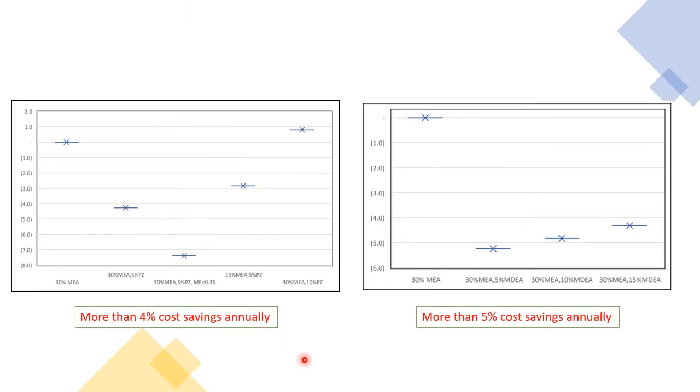The cost estimation for different blends has been done in this project to compare with the base case to see how much saving can be brought to the project with applying other blends comparing to the base case. As you can see in the left presented figure, applying, for example, the blend of MEA and piperazine can bring more than 4% cost saving annually. And also in case of applying the blend of MEA and MDEA, for example, this blend can bring more than 5% cost saving per year for the total plant.